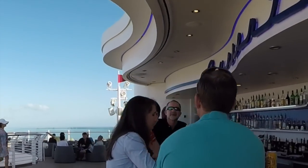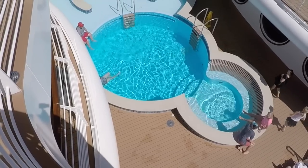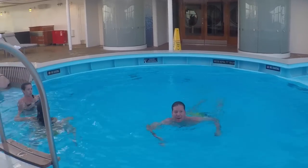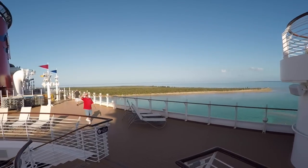To the right is Currents Bar. This is the adult only section. Down there is Quiet Cove Pool. That's also in the adult section. We're going to go down the stairs here to deck 12.